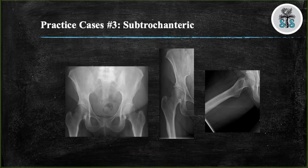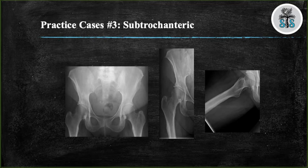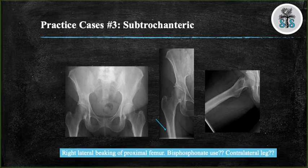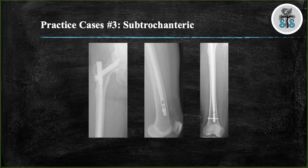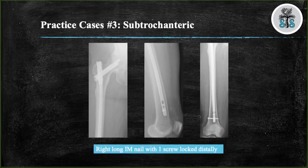Case 3. Did you see the lateral cortical beaking on the right proximal femur? Did you ask yourself whether this person is on bisphosphonate medications and whether they are having symptoms on their contralateral leg? If I were reading this x-ray, I would say we have three views: AP pelvis, AP right hip, and frog leg lateral of a right hip, demonstrating right lateral cortical thickening without fracture. You would first want to ask the patient if they were having any symptoms. In this case, the patient was having pain, so the patient was treated with a long nail locked distally with one screw. This patient had negative femur films on the contralateral side without any thigh or groin pain.